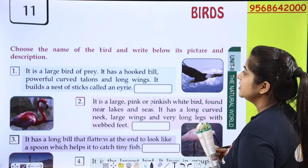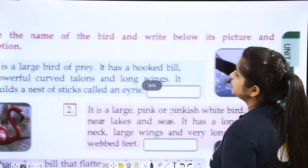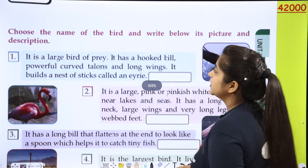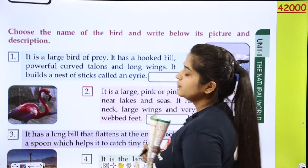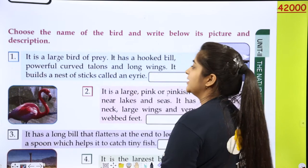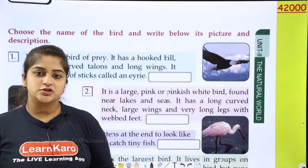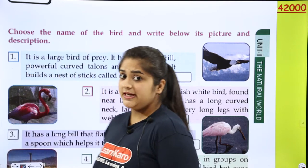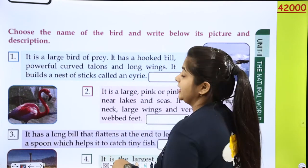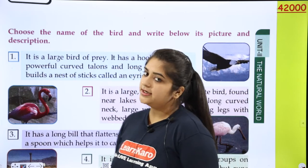Choose the name of the bird and write below the picture. Now what do you want to do? You want to tell the bird's name. You want to recognize the picture and we will read something about it. You want to see it and then understand which bird it can be, and then we want to write its name.